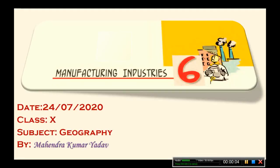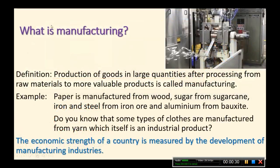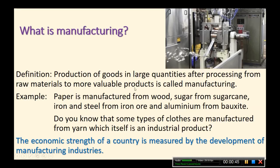Today we are going to start this chapter on manufacturing. In this module we are mainly going to discuss the definition, importance, and industrial location. So let us see one by one. The definition: production of goods in large quantities after processing from raw material to a more valuable product is called manufacturing. This definition is given in your book very clearly.